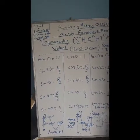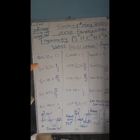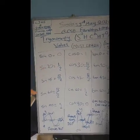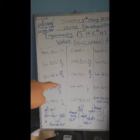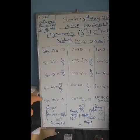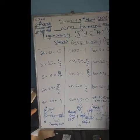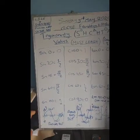Sine of zero is zero. Sine of 30 is a half. Sine of 45 is root 2 over 2. Sine of 60 is root 3 over 2. Sine of 90 is equal to 1, and I've done a little graph there.